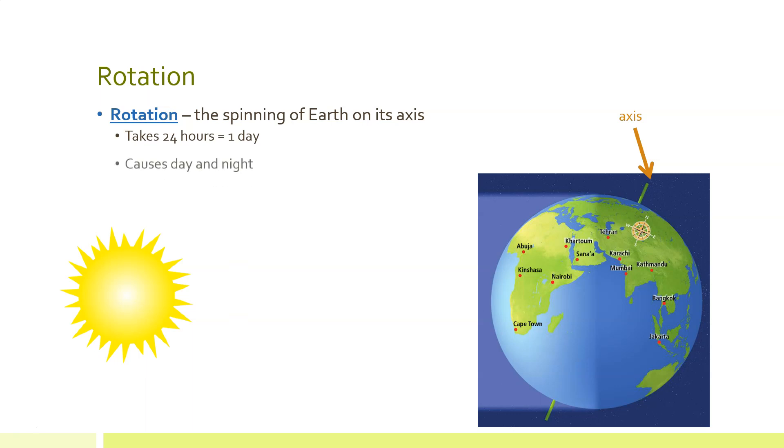Earth's rotation causes day and night, as we can see in the image here. Earth rotates to the east. As Earth rotates to the east, the sun appears to move to the west and then set in the west. The sun rises in the east and sets in the west because Earth rotates east.